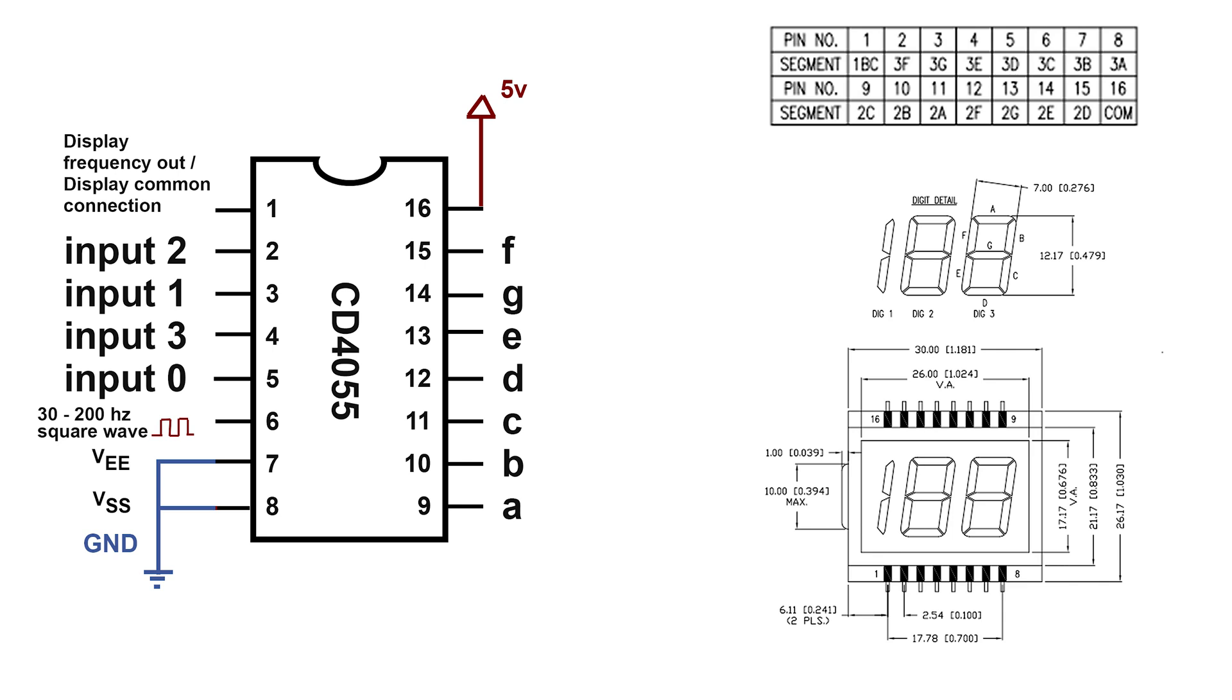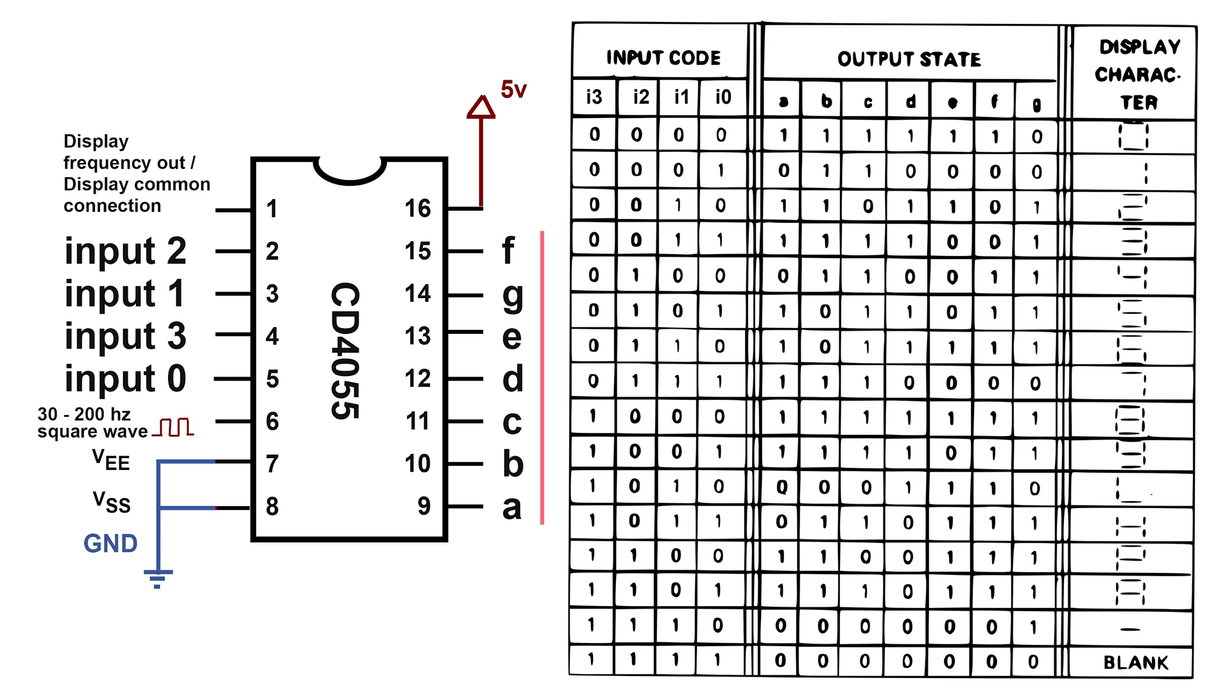This display has no decimal point or semicolon. But how do the inputs work? Well, the inputs work through a truth table that you can find in the datasheet. And here it is. And it has a lot of different characters here that can display. Mostly numbers, 0 to 9. But we also have L, H, P, A, dash, and blank when they're all high.